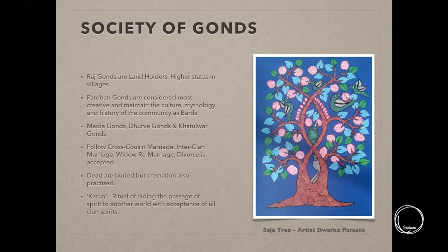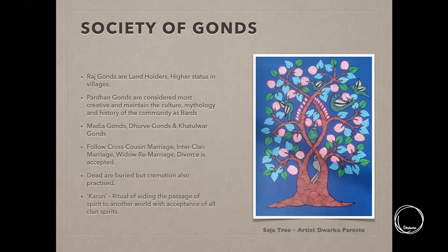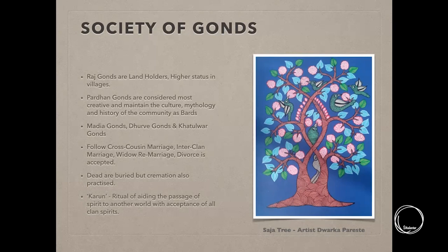There are various other branches as well — Madia, and several more depending on which region we are looking at. In this community, they follow cross-cousin marriage and there is also inter-clan marriage. Raj Gonds can marry with Pardhan Gonds but not among Raj Gonds themselves. Remarriage and divorce are also acceptable. The dead are both buried and cremated. There is a very interesting ritual called 'Karun' which happens after the death of an individual — it represents aiding the passage of the spirit from one world to the other with the acceptance of all clan spirits.